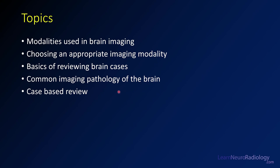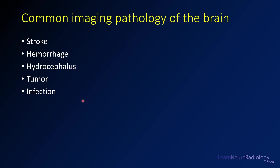Some of the subsequent videos are going to give you cases that you can review on your own with videos to walk you through them once you're finished. Common imaging pathologies of the brain are stroke, hemorrhage, hydrocephalus, tumor, and infection. These are the things we're going to cover today — some of the most common things you'll see when imaging the brain, especially in inpatient practice, and things that can make you a better consumer and orderer of your own imaging. So let's jump right in.